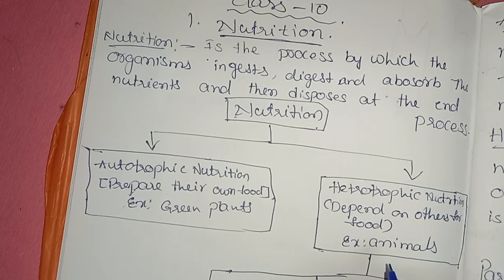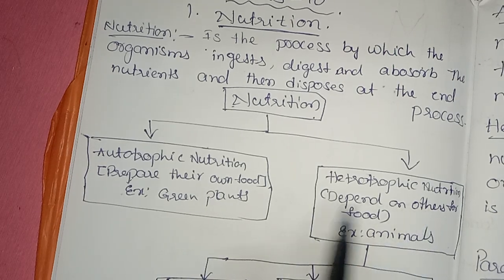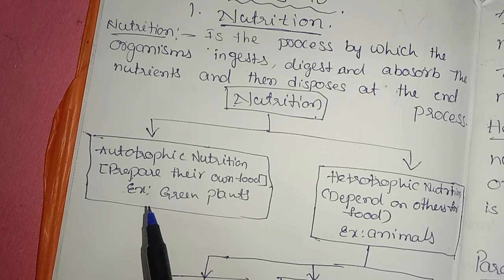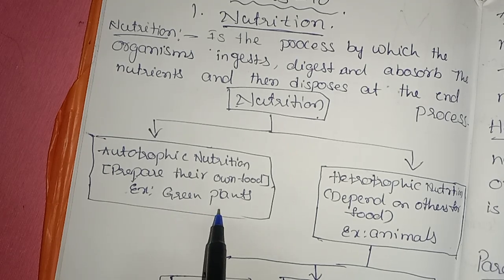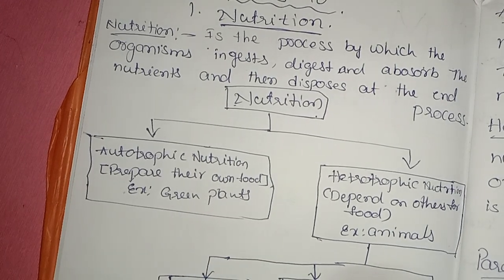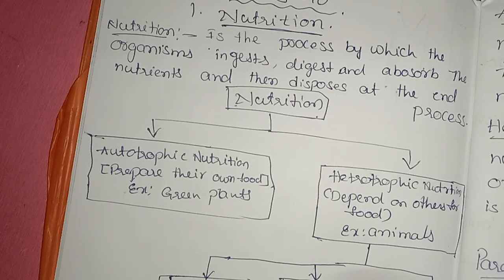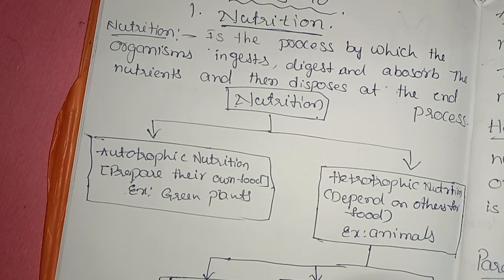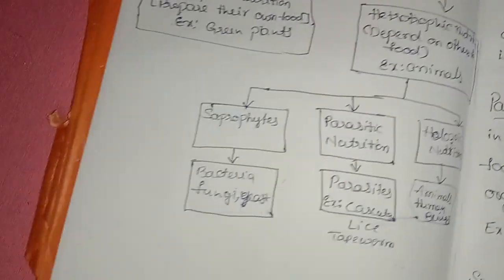There are two different types of nutrition: autotrophic nutrition and heterotrophic nutrition. Autotrophic nutrition is a type in which organisms prepare their own food — only green plants come under this. Heterotrophic nutrition is a type in which organisms depend on others for their food requirements. Except plants, all remaining organisms — human beings, animals — come under heterotrophic nutrition.